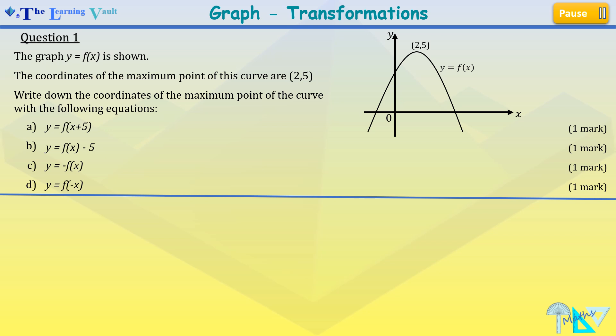And finally the last part of the question which is y equals f and in bracket minus x. Now this is a reflection over the y axis. So the new coordinates are negative 2 and 5. So with this you get your one mark as well.